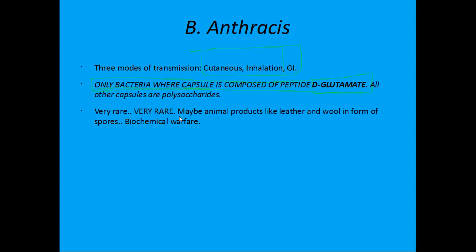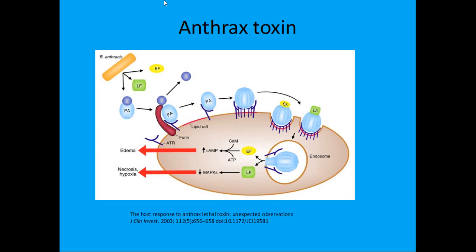Anthrax is found in animal products like leather and wool. So if someone is sorting leather and wool and they get a black mark on their skin, or they get pneumonia-type or flu-like symptoms, think anthrax — and also biochemical warfare. Now let's talk about the anthrax toxin.